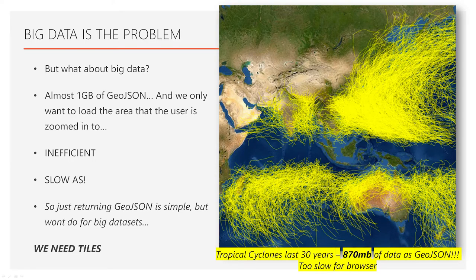Perhaps we could just return GeoJSON directly from our database and view that in the front end. But the problem is big data. This data set here is all the tropical cyclones for the last 30 years. If you were to return that from your database as vector data, it comes up to about 870 megs as GeoJSON. So you just can't feasibly pull that into the web browser every time someone wants to view it — it's inefficient, it's slow, but it's simple. It just won't do for big data sets. We need tiles, so how can we do that simply?